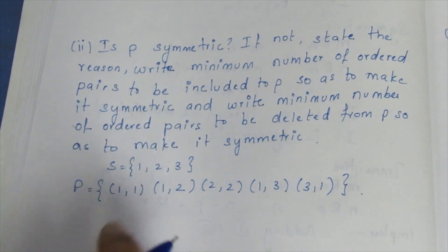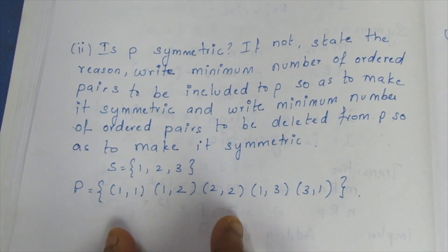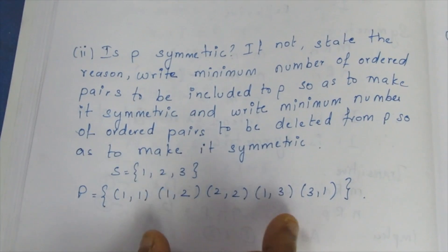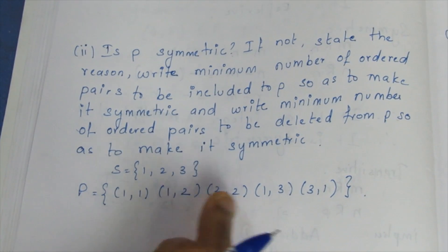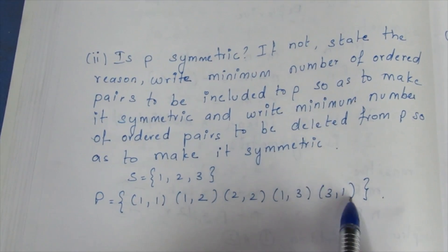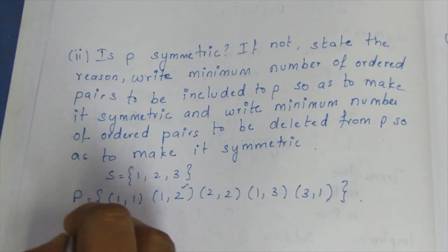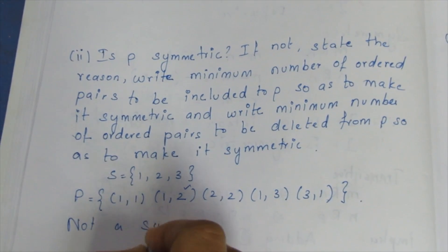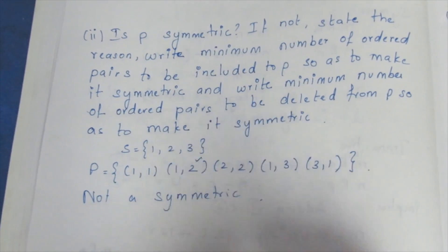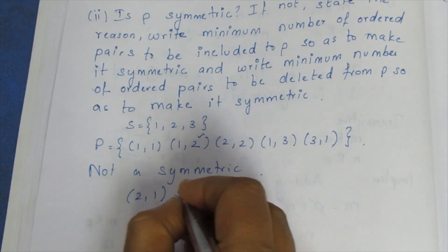For symmetric, if (A, B) is in P then (B, A) must be in P. So (1,1) is reflexive. Checking symmetric: (1,1), (1,2), (2,1), (1,3), and (3,2) and (2,1).